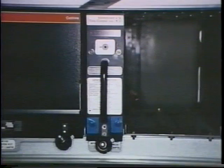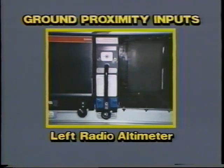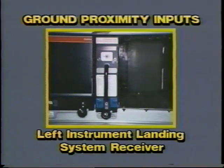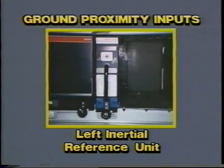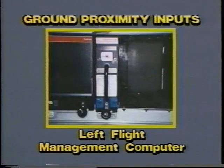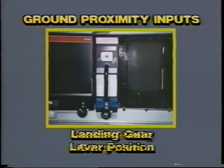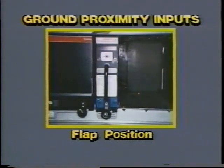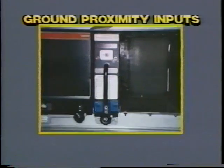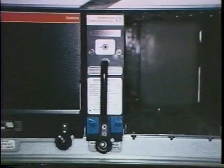Signals are received from the left air data computer, the left radio altimeter, the left instrument landing system receiver, the left inertial reference unit, the left flight management computer, and both stall warning computers. Other signals received are the landing gear lever position and flap positions.